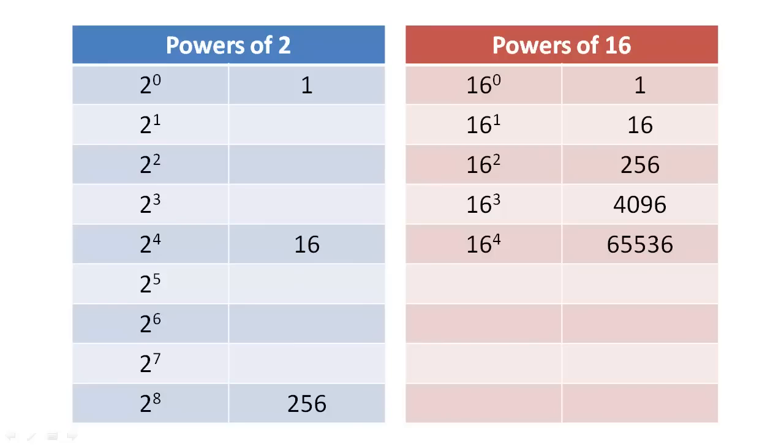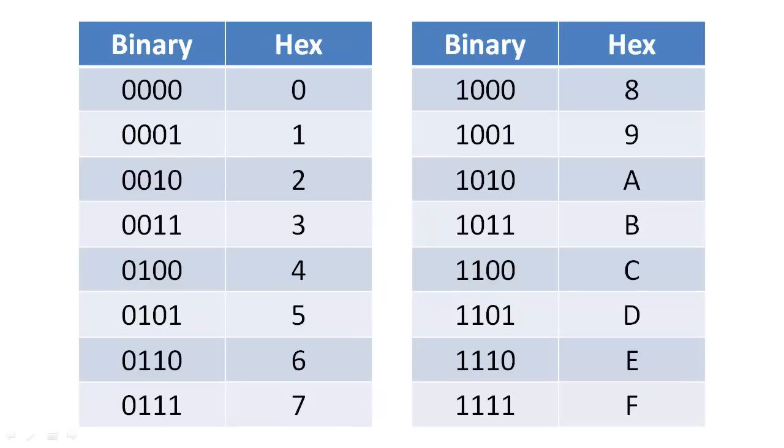Therefore, we can group bits of binary numbers into groups of 4, like those shown in these lookup tables, to easily convert between binary and hexadecimal numbers.